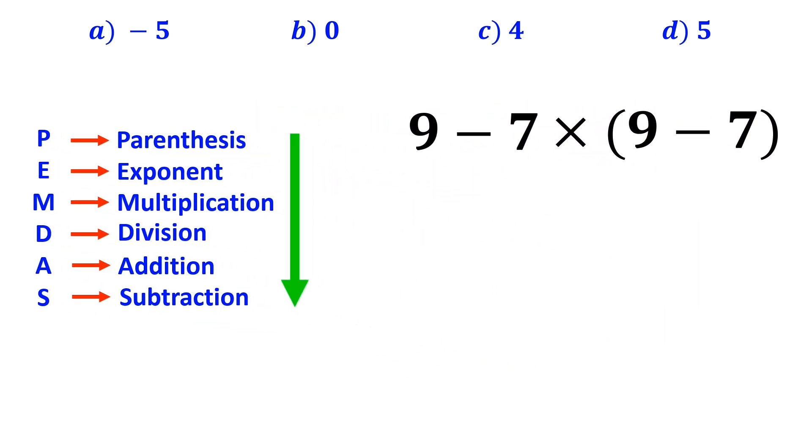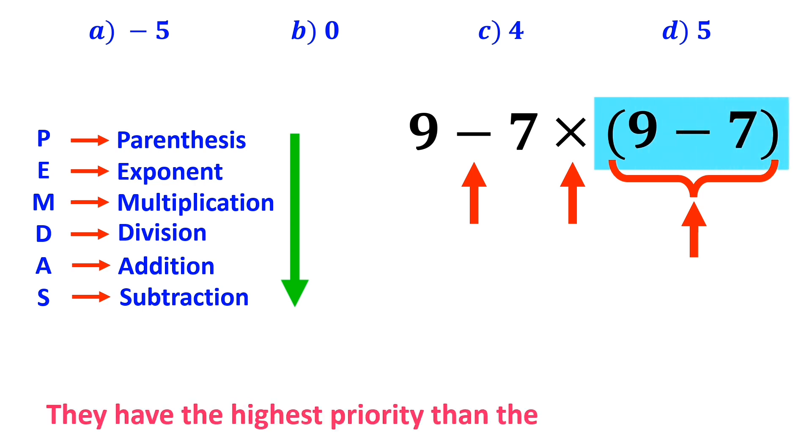As you can see in the image, in this expression we have a subtraction sign, then a multiplication sign, and finally parenthesis. We must start with the parenthesis first, because they have the highest priority over the other operations.